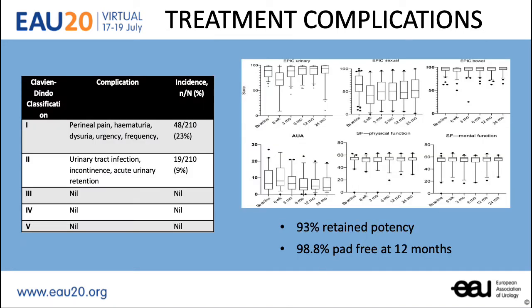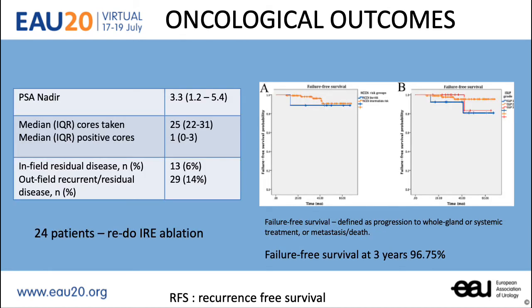We had no Grade 3 or 4 Clavien-Dindo complications, and 93% of our patients retained potency at 12 months, and almost 99% were pad-free at 12 months. PSA nadir was 3.3, and generally there was a 2-point drop in patients after treatment.